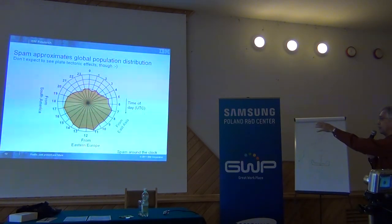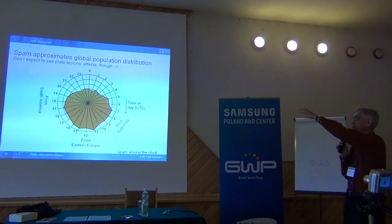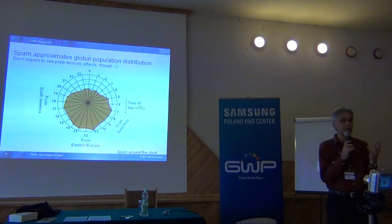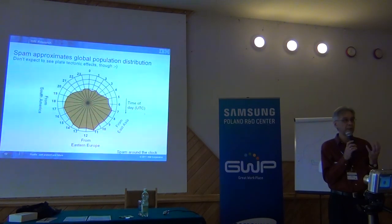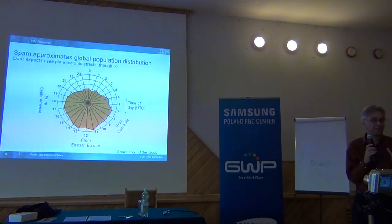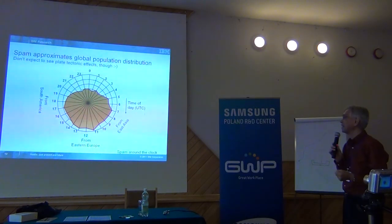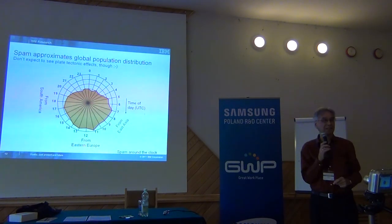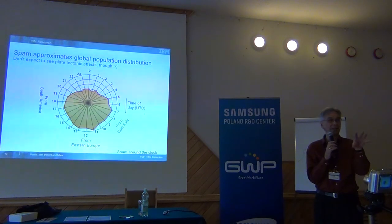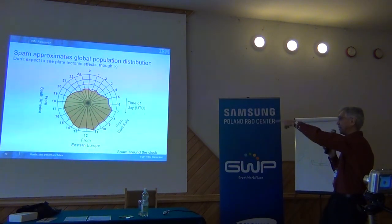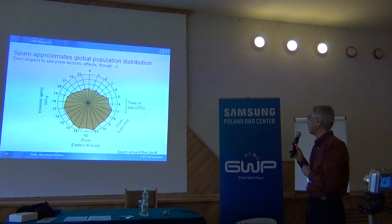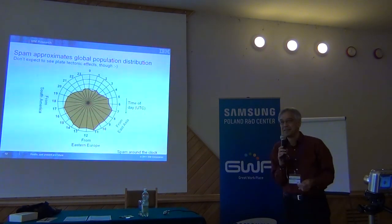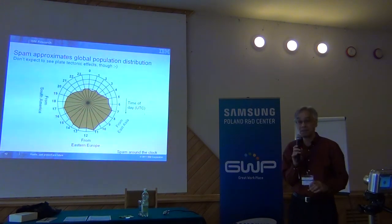East Asia is on this part of the day, and Eastern Europe and South America are over there. The minimum at the top is basically because there are not a lot of people with computers in the middle of the Pacific Ocean. If there were a large landmass in the middle of the Pacific, you would have a very constant distribution of spam. It's a semi-serious look at spam and plate tectonics.